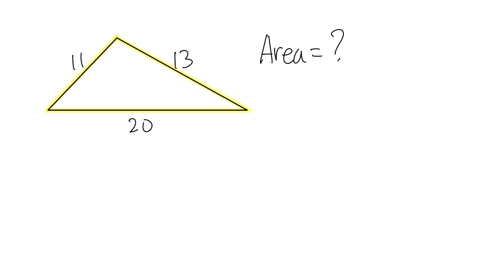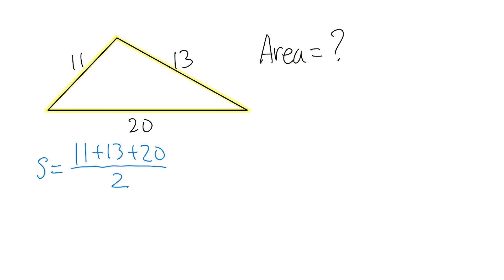First, we are going to add all the sides: 11 plus 13 plus 20. This is just the perimeter of the triangle. And then we are going to divide that by 2 — this is called the semi-perimeter of the triangle. It's usually denoted by the letter S. On the top is 44, on the bottom is 2, so we get 22.